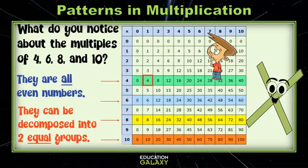They can all be decomposed into two equal groups as well. Let's see what that means. Let's look at 4. 4 is 2 and 2, or 2 equal groups of 2. Now, let's look at 24. 24 is 12 and 12, or 2 equal groups of 12. And 16 is 8 and 8, or 2 equal groups of 8. You could go through every number that is highlighted and divide it into two equal groups. Good job!